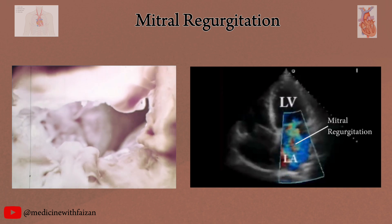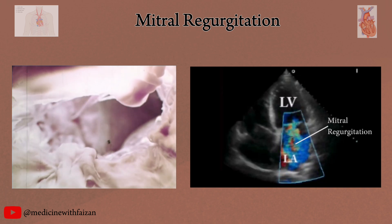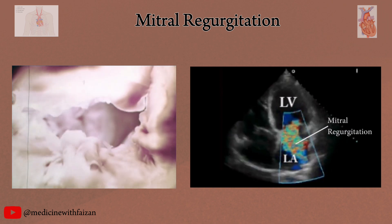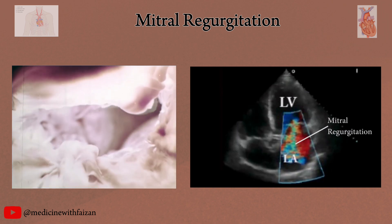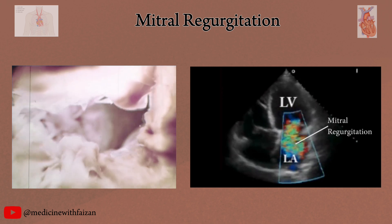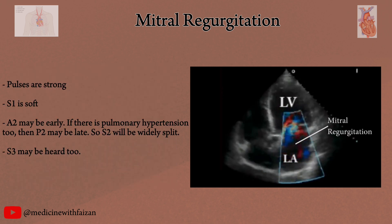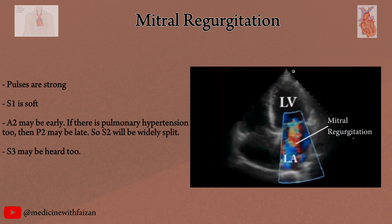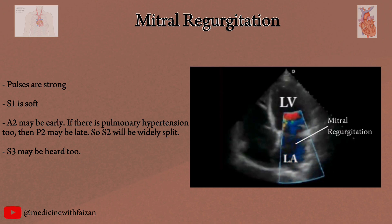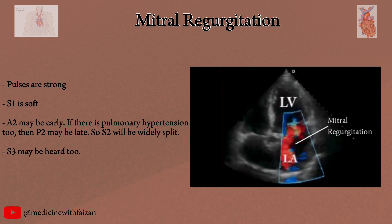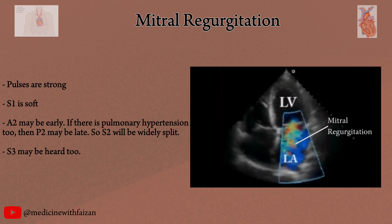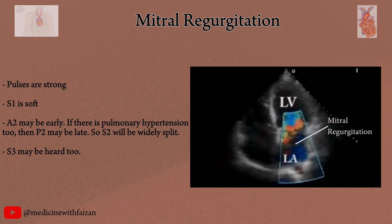In mitral regurgitation, the mitral valve leaflets don't close properly, leading to regurgitation of blood from the left ventricle into the left atrium during systole, as can be seen in this echocardiogram. In mitral regurgitation, pulses are strong, not weak, so long as ejection fraction is normal. S1 is diminished or soft, representing inadequate apposition of mitral leaflets. The A2 component may be early, and if there is pulmonary hypertension, the P2 component will occur late, so S2 as a whole will be widely split.